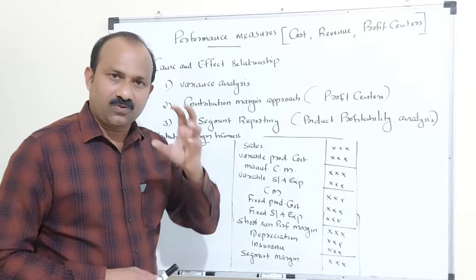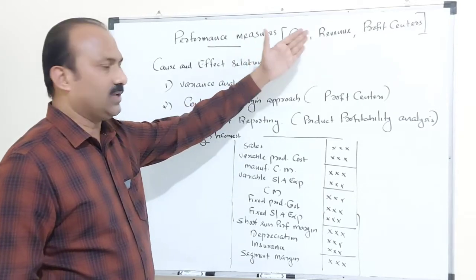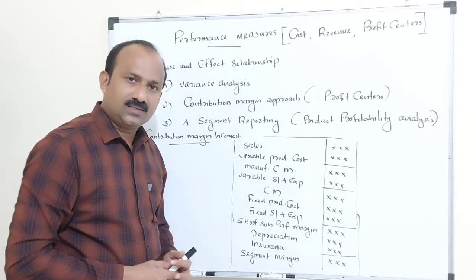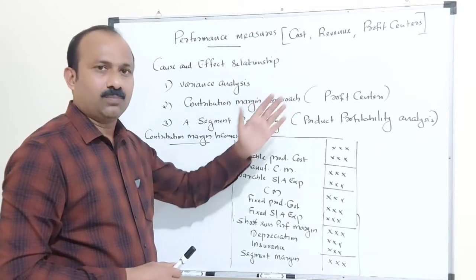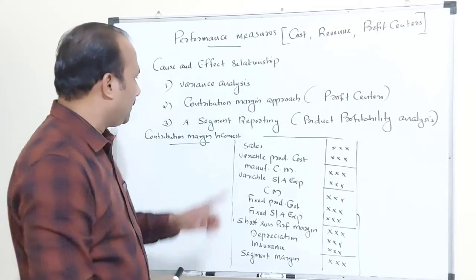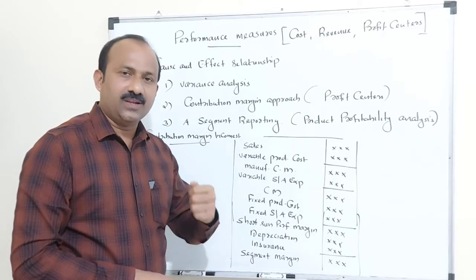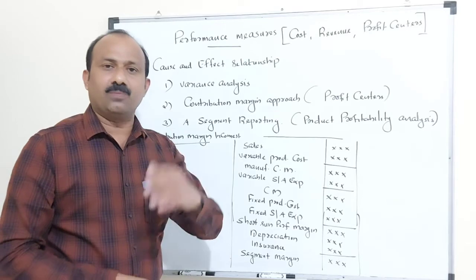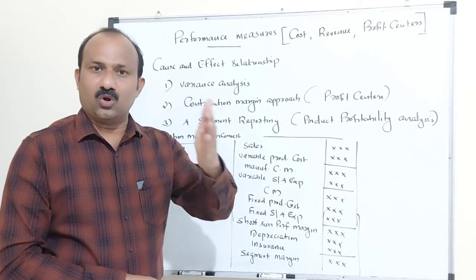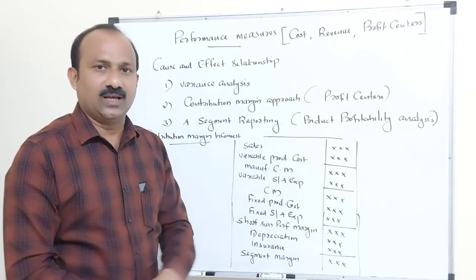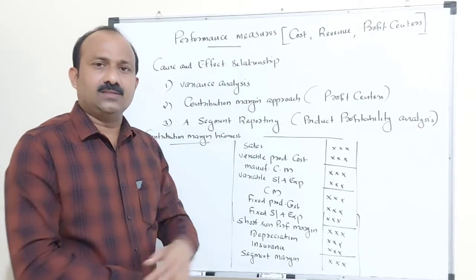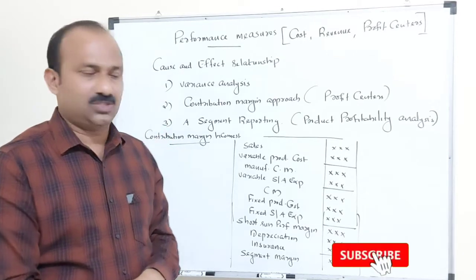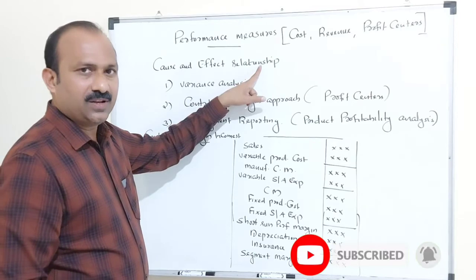In order to measure the performance of the organization based on cost, revenue, and profit centers, we can do variance analysis, contribution margin approach related to financial accounting, and segment reporting. If needed, we can do a product profitability analysis to determine how profitable a product is in the market. All these analyses are based on the decision making purpose of the organization, and cause and effect relationship is very important.